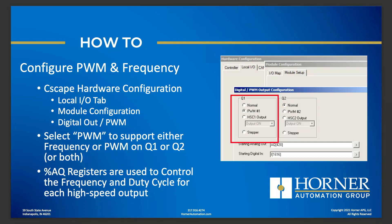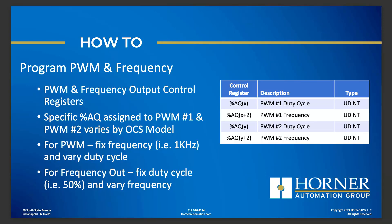Registers are assigned to the high-speed output functions for duty cycle and frequency, and those will be assigned to percent AQ registers. By manipulating those AQ registers for frequency and duty cycle, we can either fix the frequency and vary the duty cycle, or fix the duty cycle and vary the frequency. Once hardware configuration is done, it's a matter of finding the specific analog output registers tied to duty cycle and frequency for output one or output two, and then manipulating those registers to replicate our PWM or frequency output.